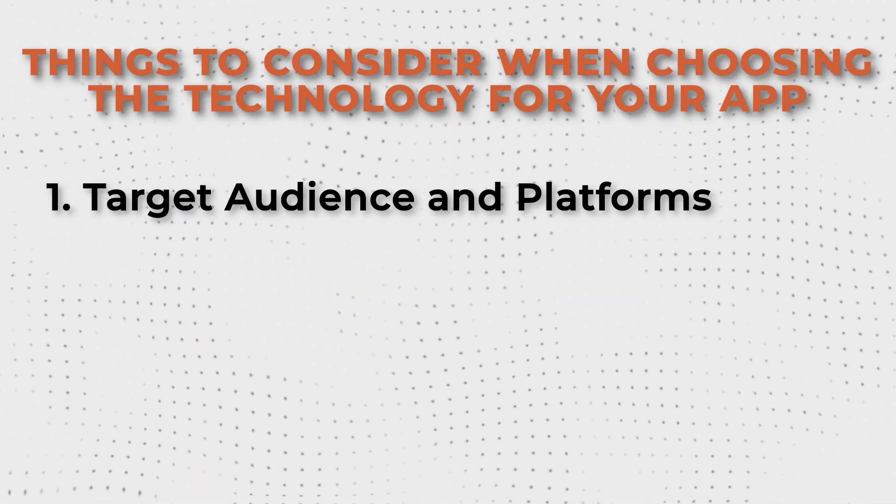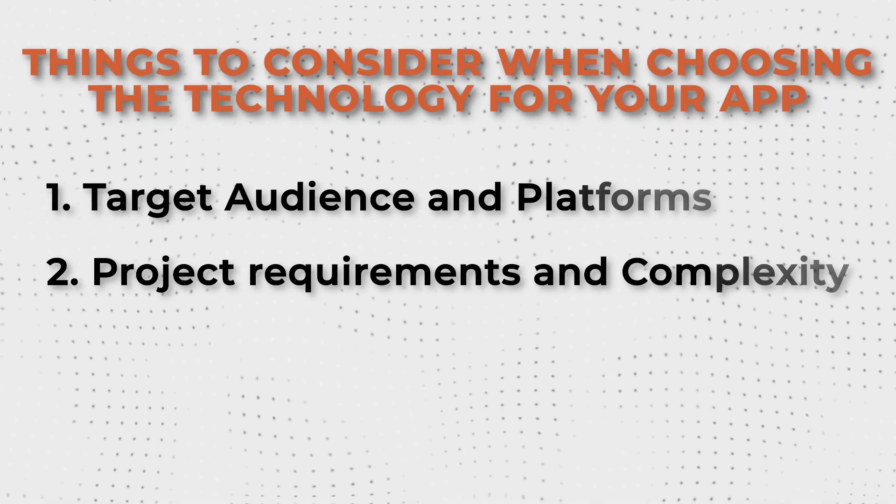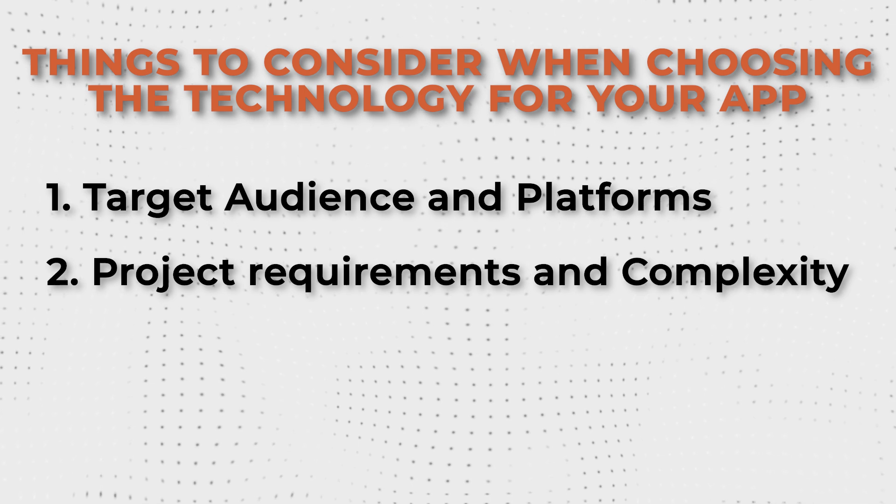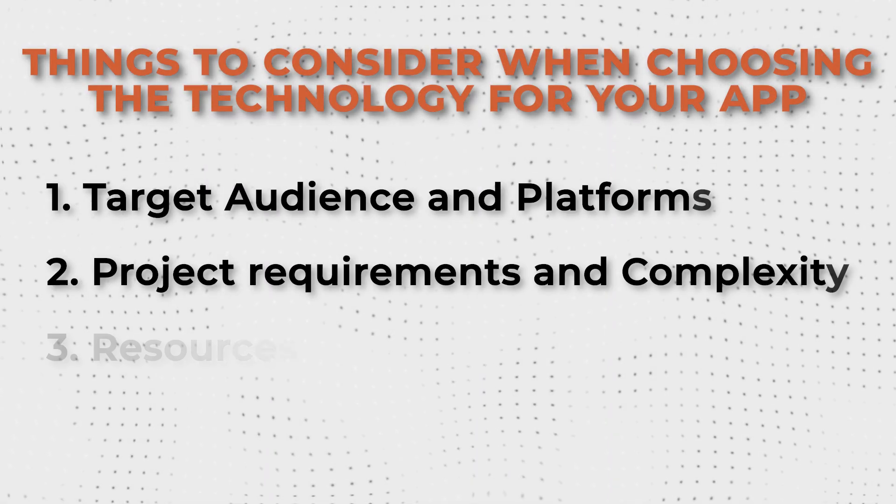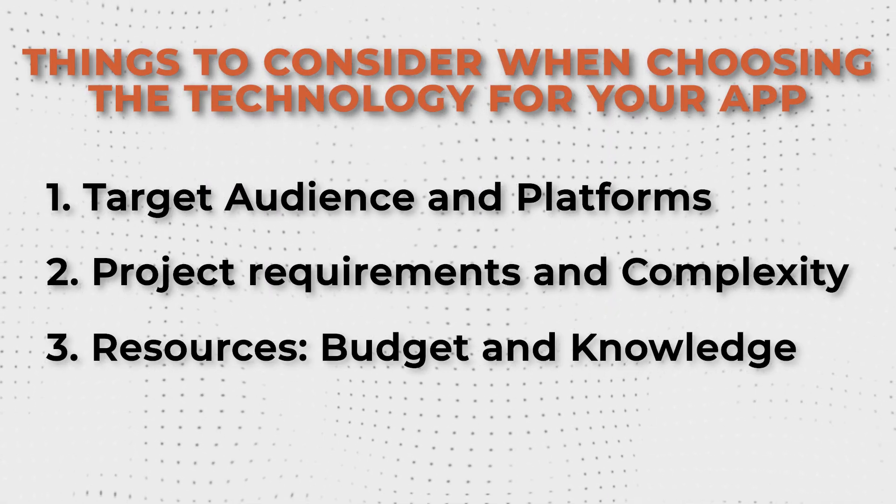When in doubt what to choose, always go back to the three main things we discussed. Target audience and platforms — you might be able to solve the problem using only one platform, so build natively for that platform at full speed. Then app requirements and complexity — pay attention especially to harder integrations and the long-term plan of your app and what complications it might add along the way, because you don't want to end up like Airbnb, right? I mean they're still here, but they had to make that hard choice at some point. And finally, your resources — the budget and the skills. Consider what you and your team already know, your risk aversion towards building this app, and how much you're willing to invest and risk.